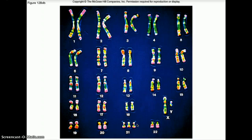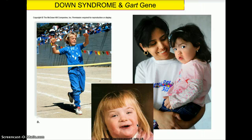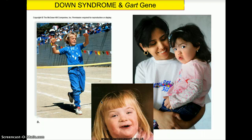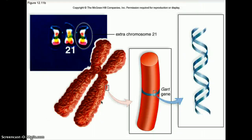Trisomy 21 is also called Down syndrome. Looking at the GART gene and a typical individual with Down syndrome, common characteristics include a wide, rounded face, a fold on the upper eyelids, some mental disabilities, and a large tongue which makes it difficult to speak distinctly. An individual with Down syndrome has those three copies of chromosome 21, and research is now using techniques to discover which genes on that chromosome are causing Down syndrome's disabilities.